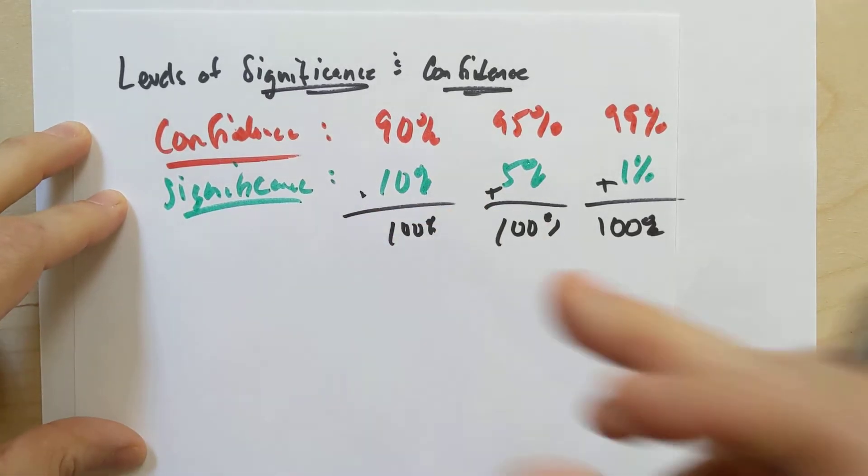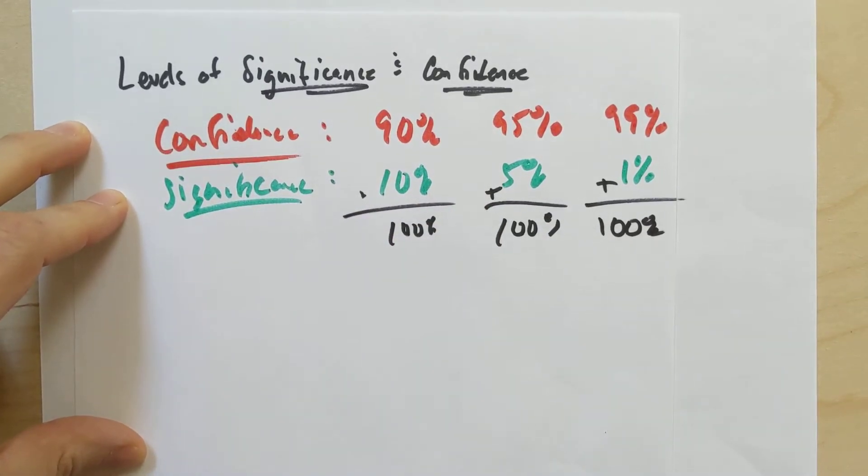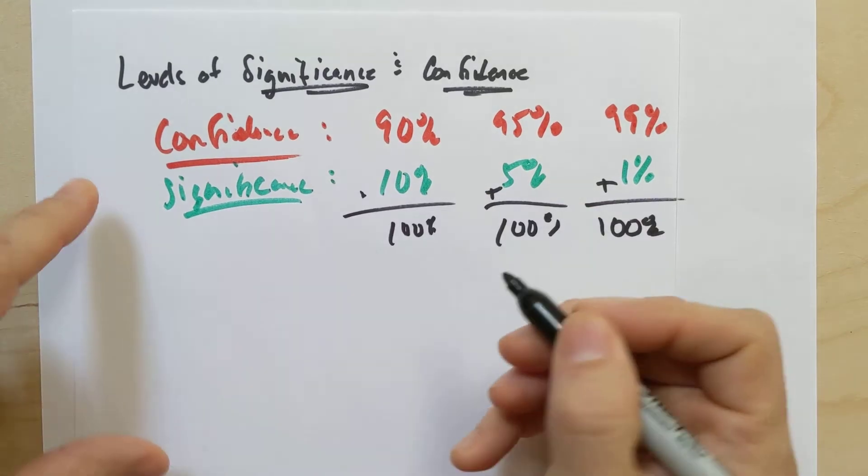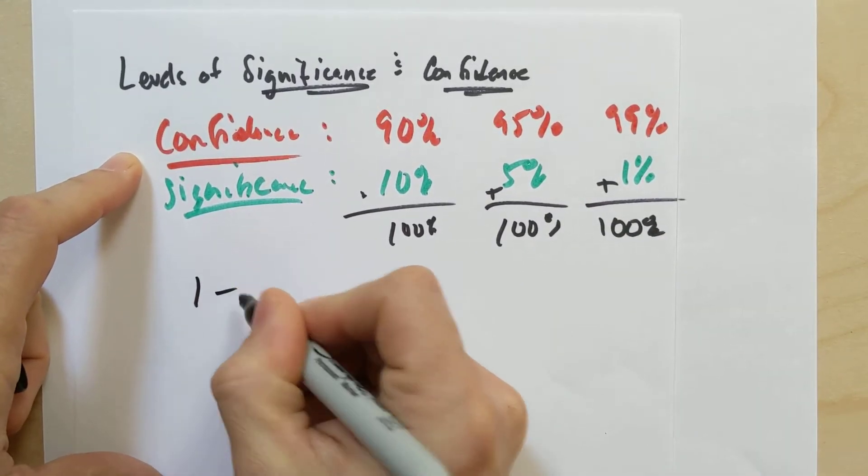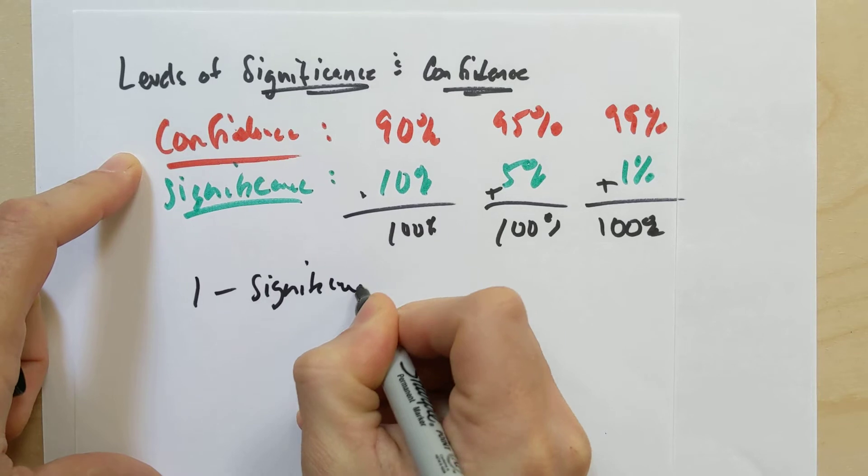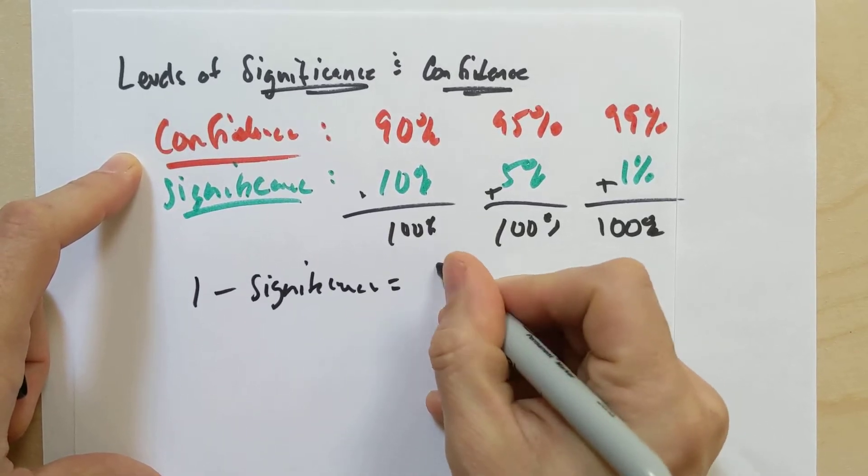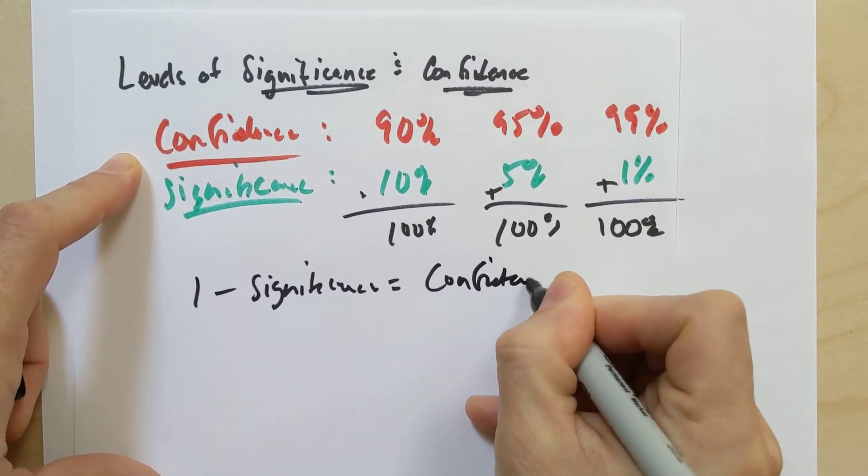And the key idea here is that in some sense, we could think of the level of significance as a kind of complement to the level of confidence. In other words, if I did 1 minus the level of significance, that would equal the level of confidence, right?